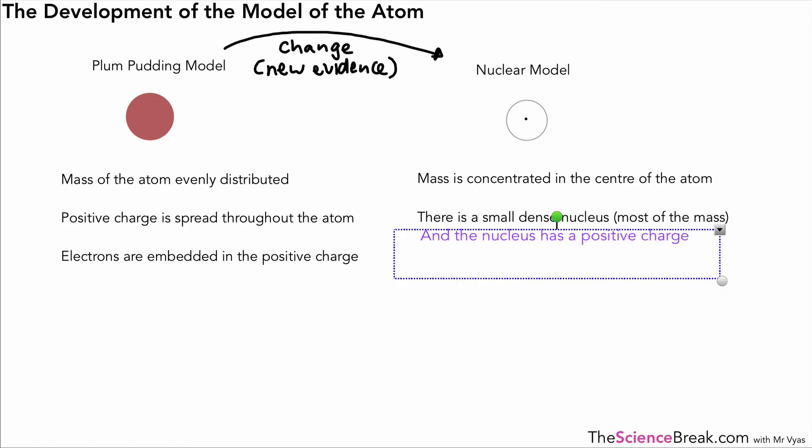In the plum pudding model, the electrons were embedded in that positive charge, whereas in the nuclear model the electrons orbit the nucleus or they go around that small dense nucleus. The last point is that the atom was a solid mass in the plum pudding model, whereas in the nuclear model the atom is mostly empty space.